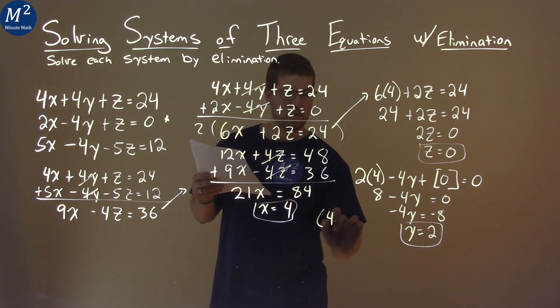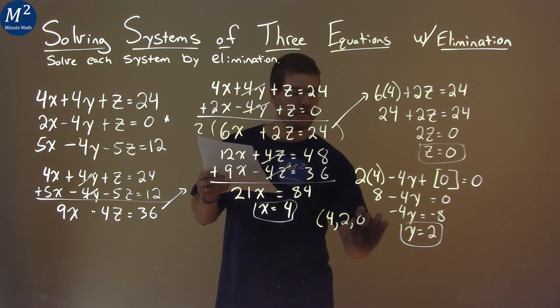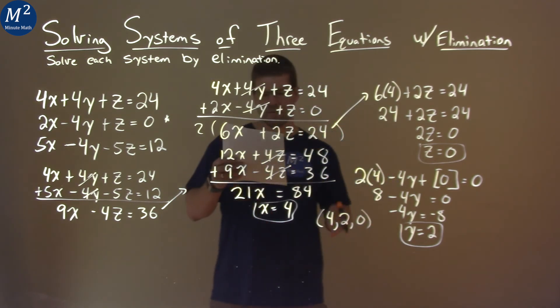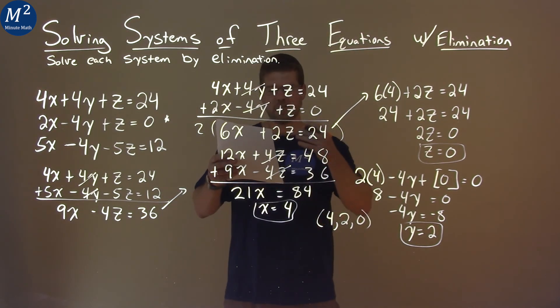We write as a coordinate point, 4 comma 2 comma 0. And that's our solution. x is 4, y is 2, and z is 0. And that's our final answer.